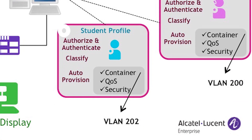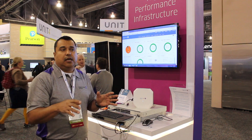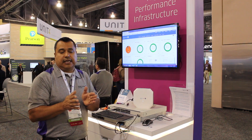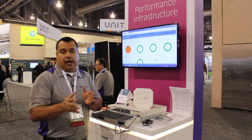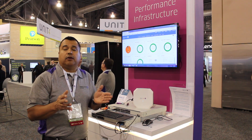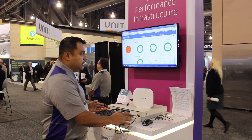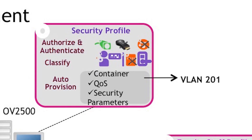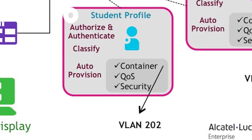I use this idea around campus, which means I provide different profiling — and that's what UNP is all about. My VLANs are security administration and student. The two key ones are 201 and 202: VLAN 201 is your security administration, and 202 is your student VLAN.